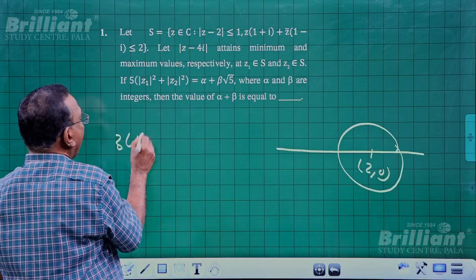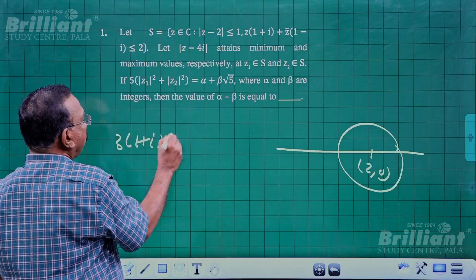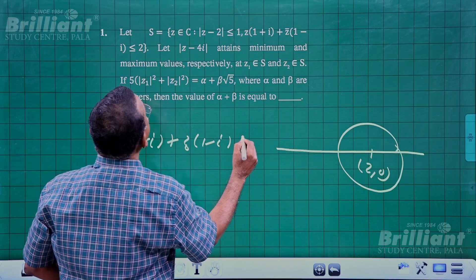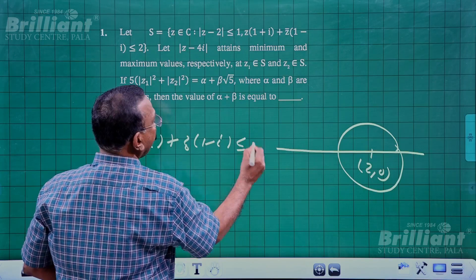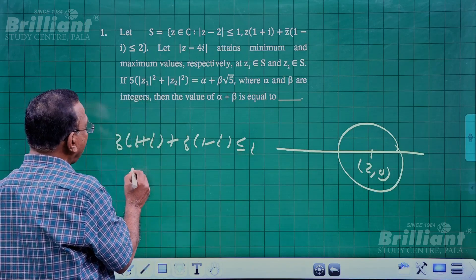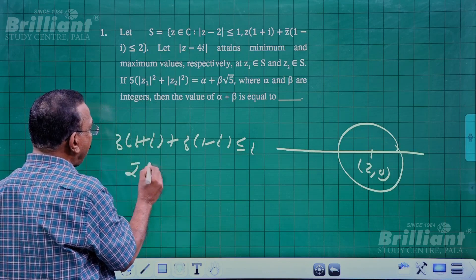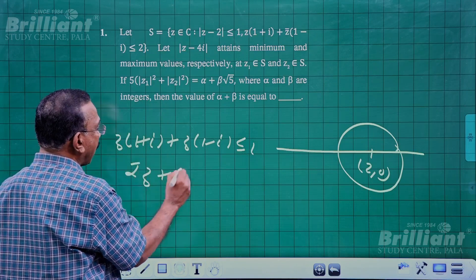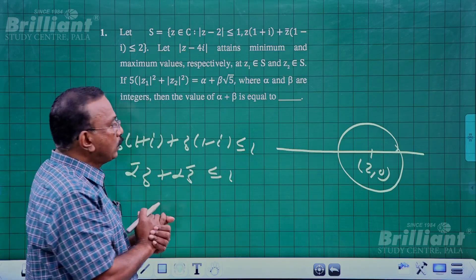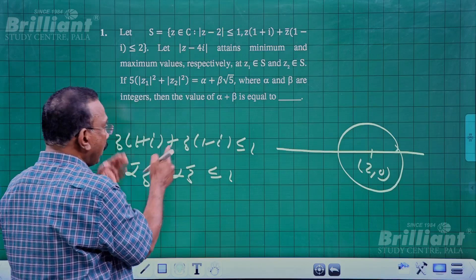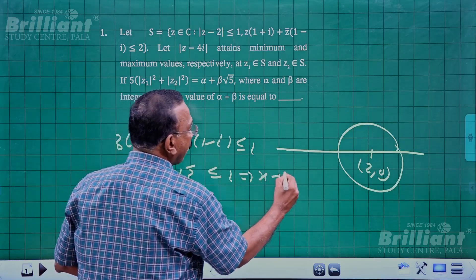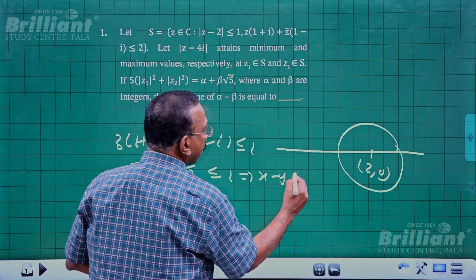Now, z(1+i) + z̄(1-i) ≤ 2 is actually a straight line. In the form ᾱz + αz̄ ≤ 2, this is a straight line. Solving it gives the inequality x - y ≤ 1.